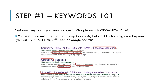Step number one is finding seed keywords you want to rank organically for in Google search. You want to eventually rank for many keywords, but start by focusing on a keyword that you will positively rank number one for in Google search.